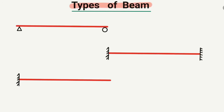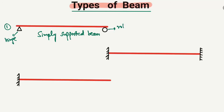The first type of beam is known as the simply supported beam. It is called a simply supported beam because it is supported by only two supports — one is a hinge support and the other is a roller support. This is the most simple type of beam, supported at both ends.